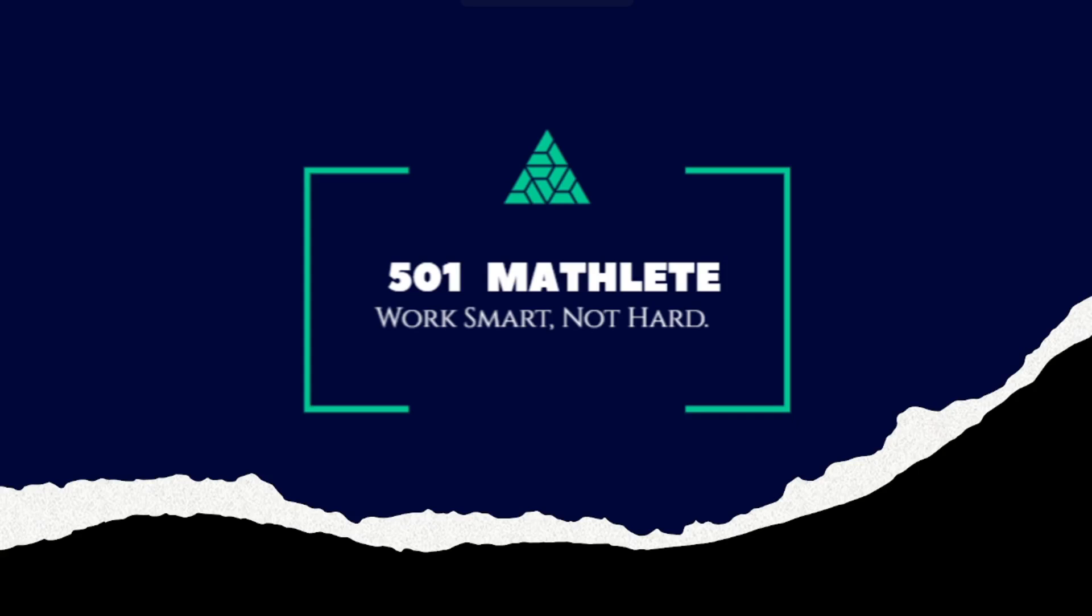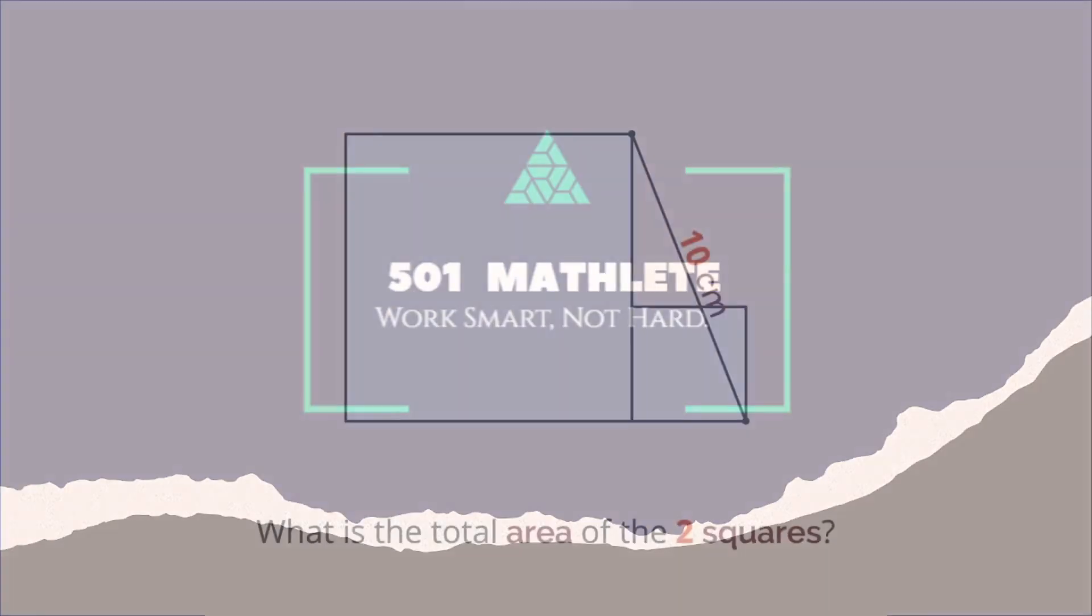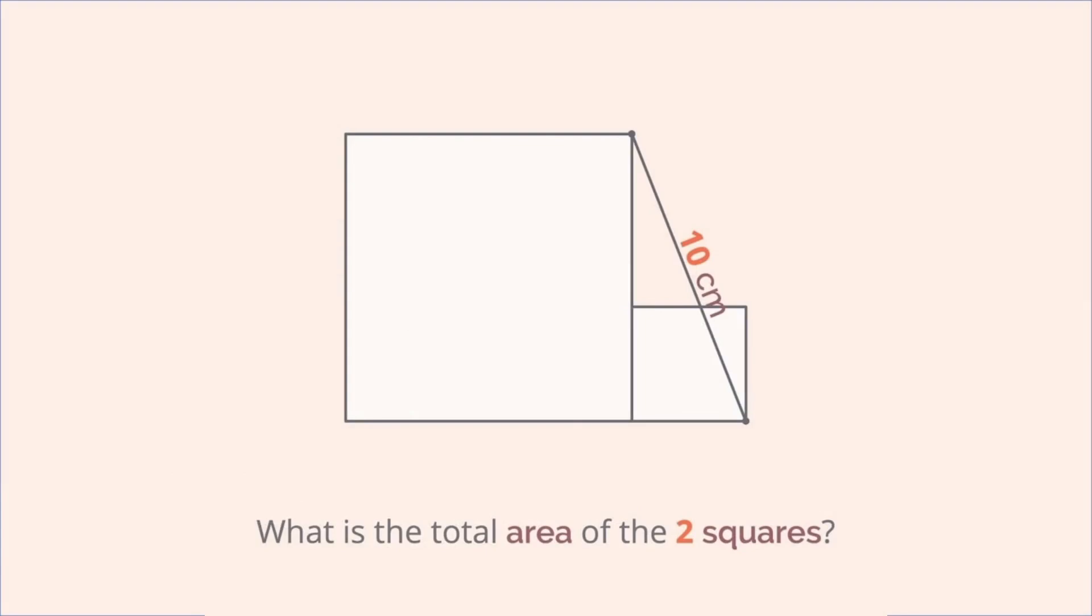Welcome to 501 Mat Lead, where we work smart not hard. In today's video, we're given this diagram of two adjacent squares and the added information that the length connecting those two points is 10 centimeters. With just that, we're to determine the total area of the two squares.